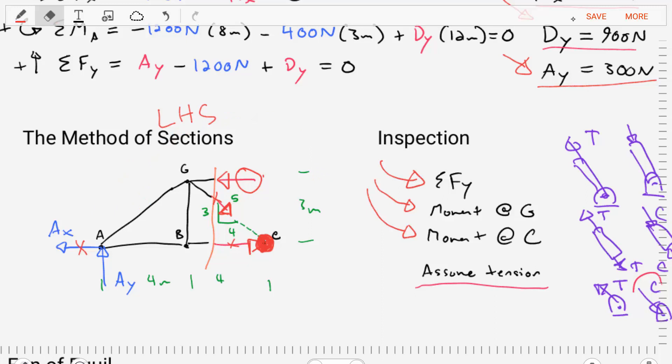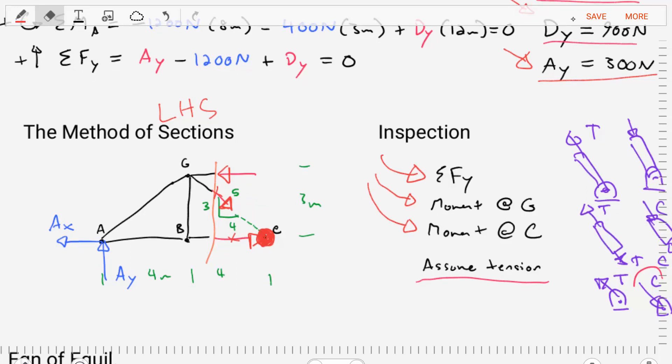Simple as that. This is the inspection method where we're applying the equations of equilibrium or the equilibrium equations in order to figure out what senses we need. We're not drawing the equations themselves, but we're just using it logically to get these directions.